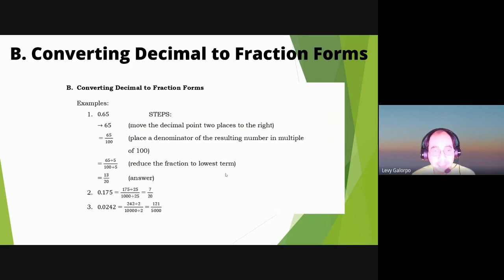Same as true with our examples 2 and 3. Same process lang din. 0.175 - so tatlong digit dyan, 3 decimal digits, therefore 1000 yung dapat. Hindi sila i-divide no? 175 divided by 25, 1000 divided by 25, so ang answer ay 7 over 40.